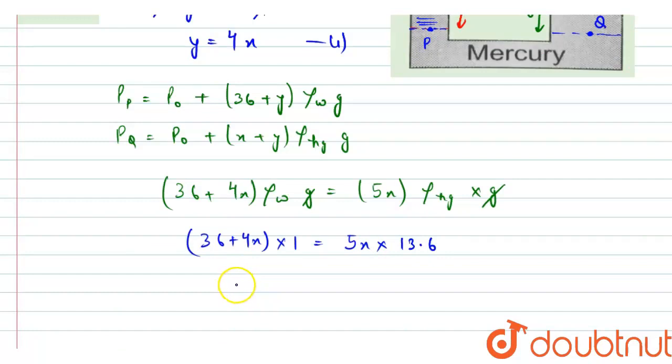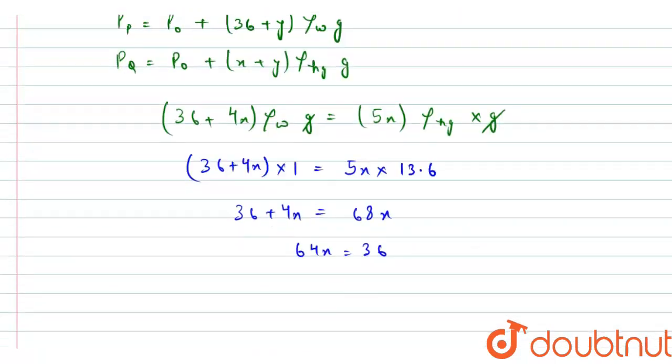So from here we will get 36 plus 4x equals to 5 times 13.6, that is 68x. So we will get 64x equals to 36.